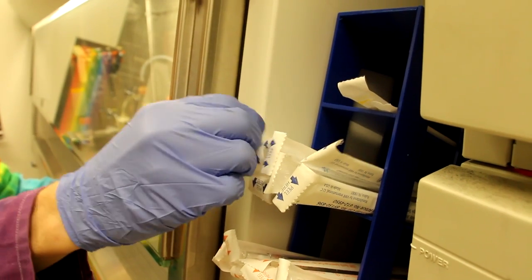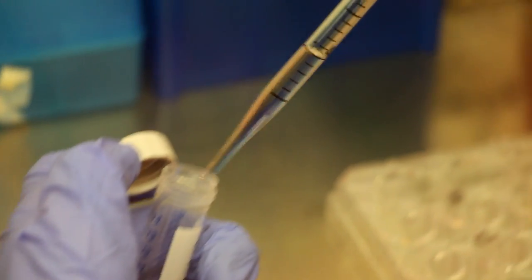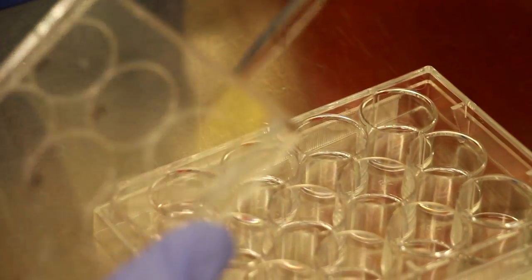After you've aspirated the media from your 12-well plate, go ahead and add 1 ml of fresh growth media to one of the wells. This will serve as an untransfected control.